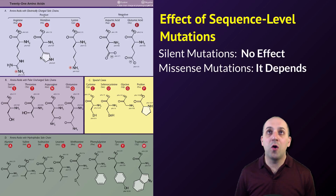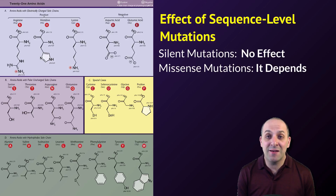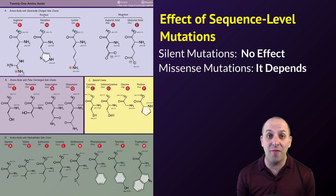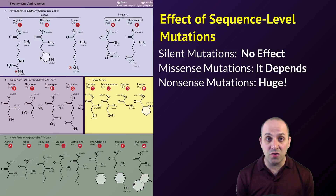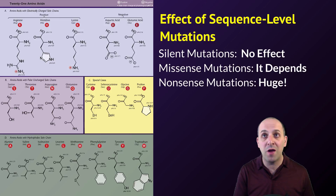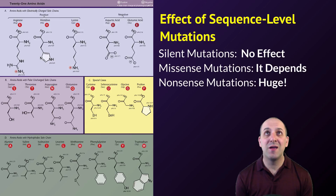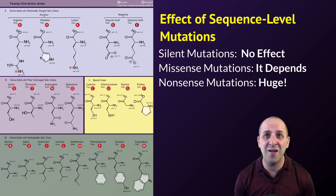On the other hand, if the missense mutation causes a significant change in the chemistry of the amino acids involved, the effect can be pronounced. Sickle cell anemia, for instance, is the result of a missense mutation, and that has a significant effect on the physiology of the organism. The last type of sequence-level effect is a nonsense mutation, which results from generation of a premature stop codon or removal of a stop codon, allowing translation to continue. In pretty much every case, this results in production of a garbage protein that does not serve any role in the cell's physiology.